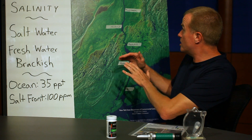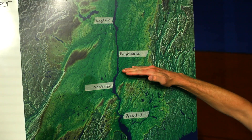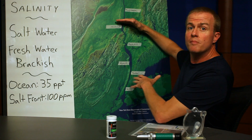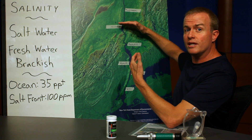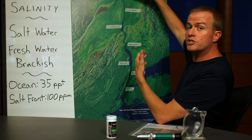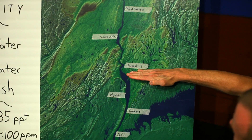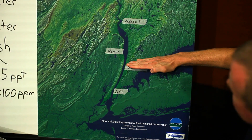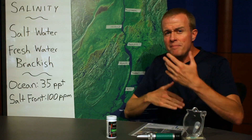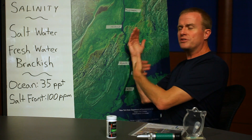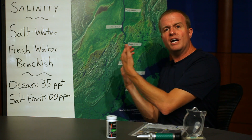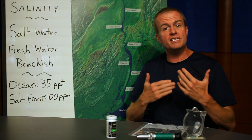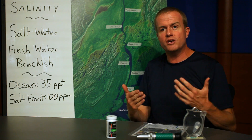Most summers, that salt front might be up around Newburgh or Poughkeepsie, but in the spring, with a lot of snow melt, that salt front will push far to the south. That means that animals that live here in the Hudson River have to live in a very dynamic ecosystem.